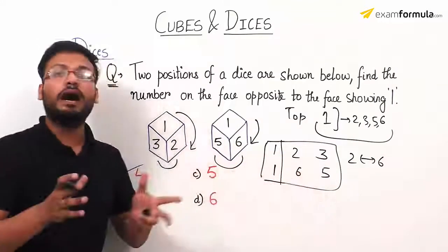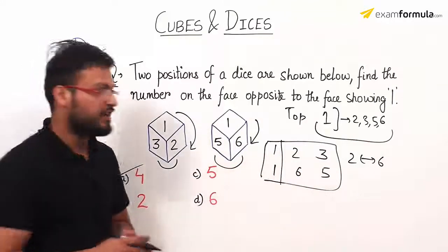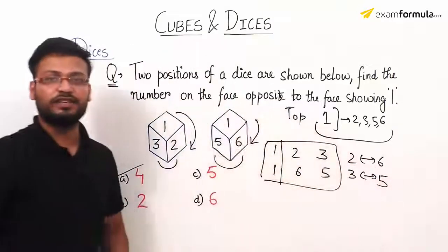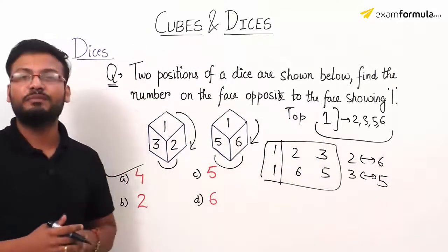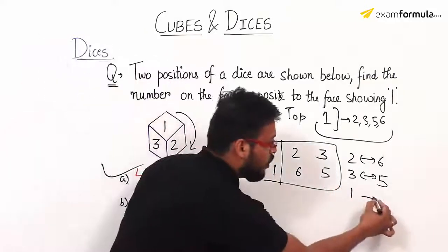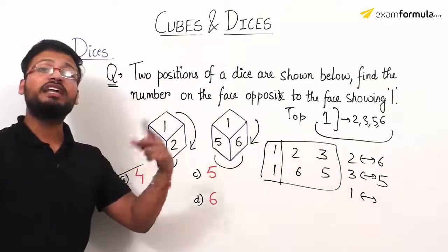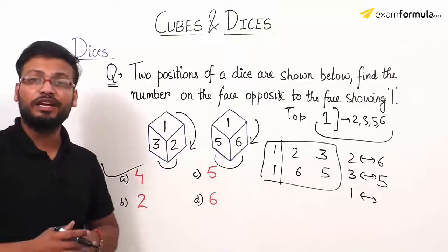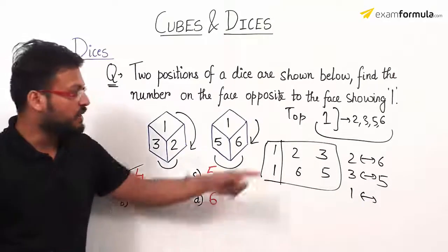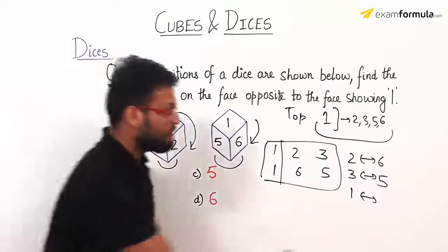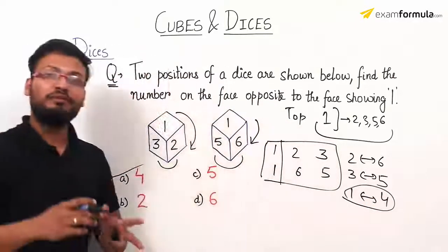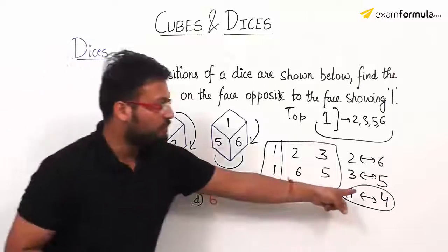Similarly, 3 and 5 will also appear on opposite faces. The left-out numbers are 1 and 4. Since 1 is the repeated number we ignored, the number that doesn't appear at all is number 4. That number will appear on the face opposite to number 1. So number 4 is opposite to number 1.